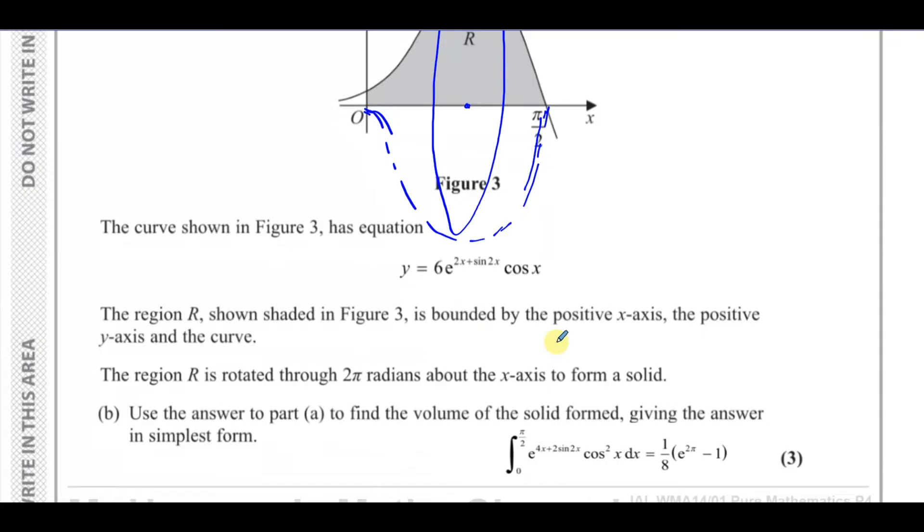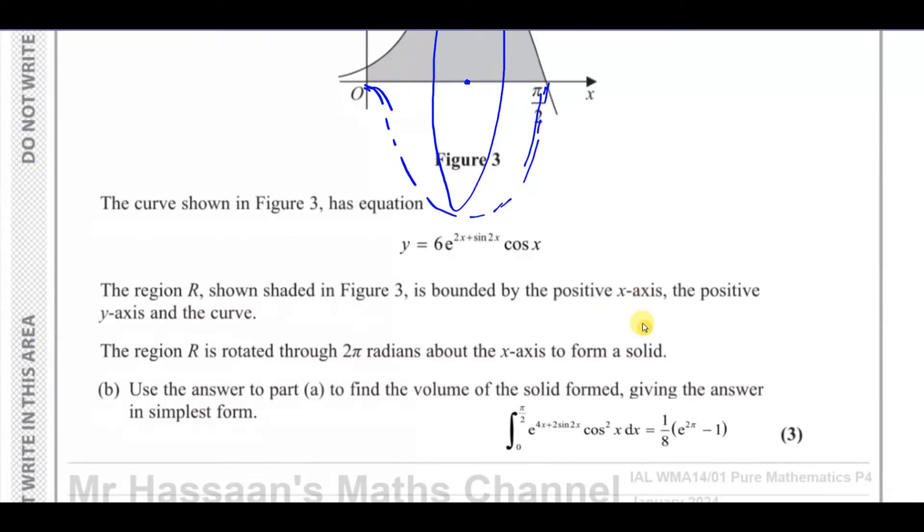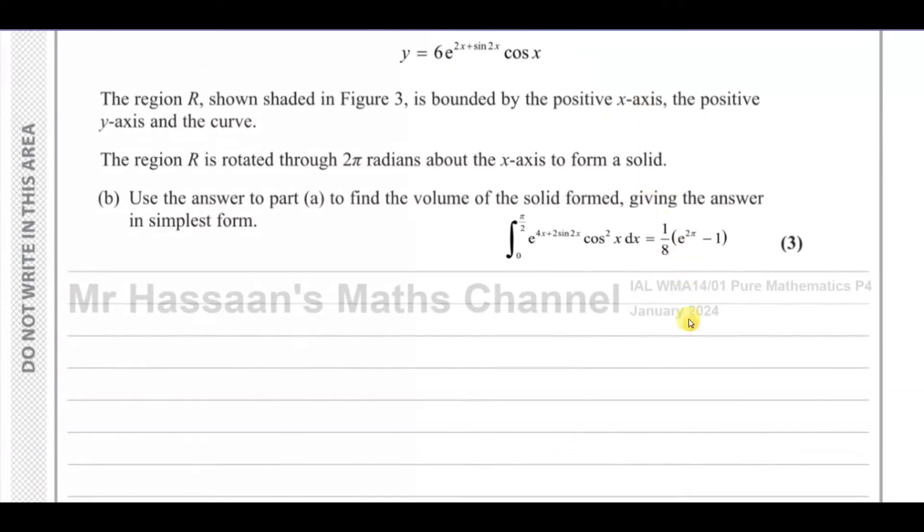It says use the answer to part A to find the volume of the solid formed, giving the answer in simplest form. When we want to find the volume of a solid of revolution that has been rotated through one revolution about the x-axis, we use the formula: the integral of π times y squared dx.